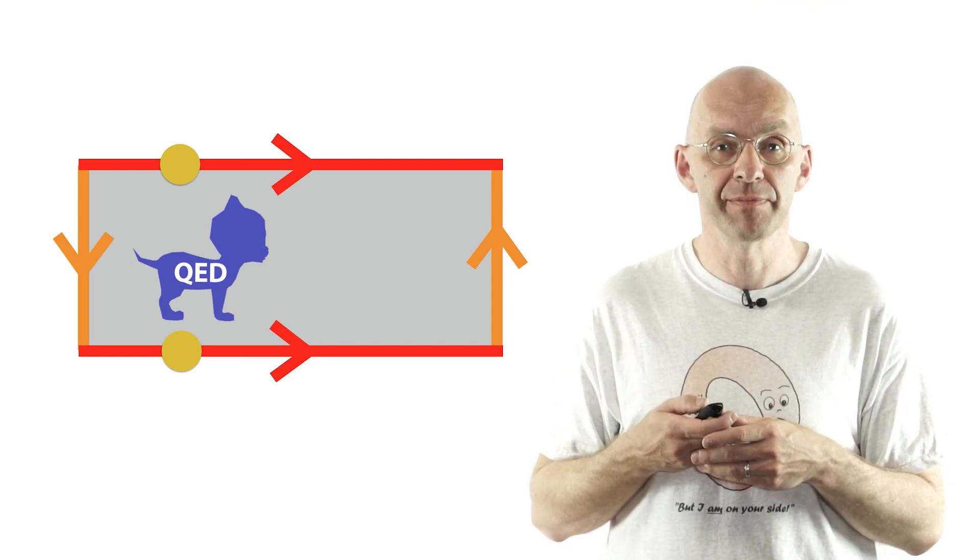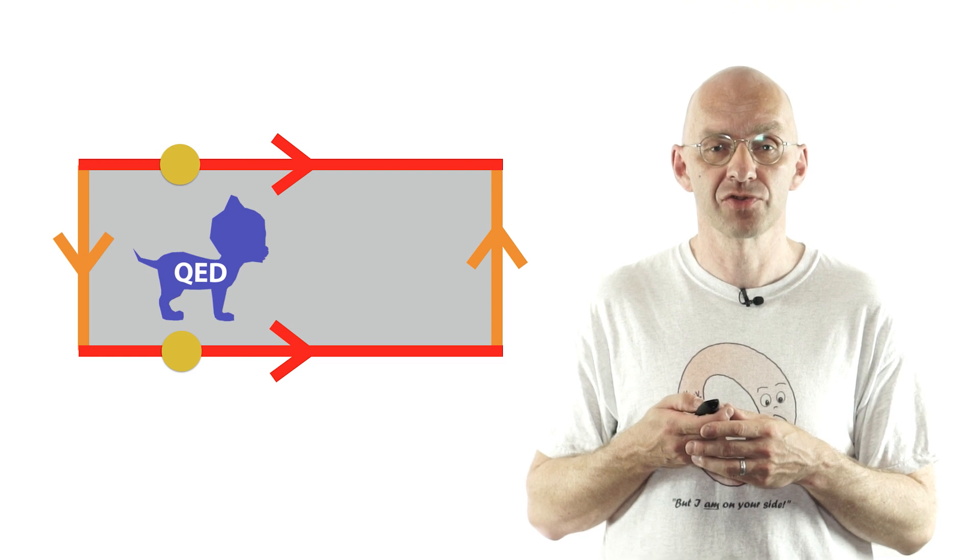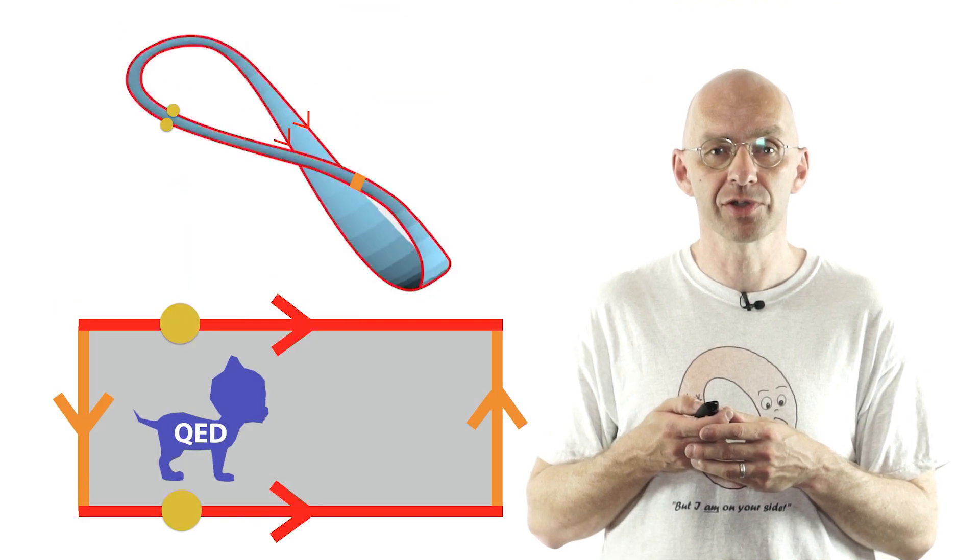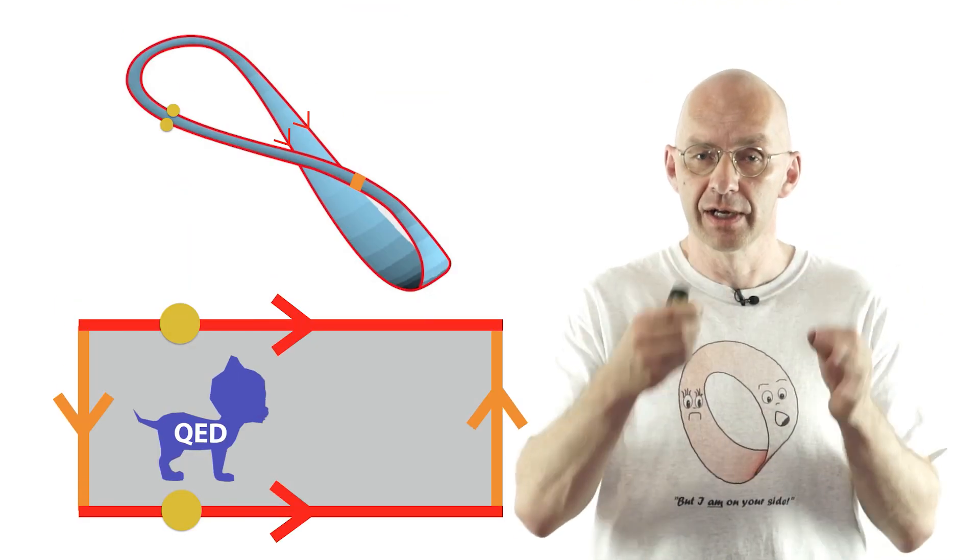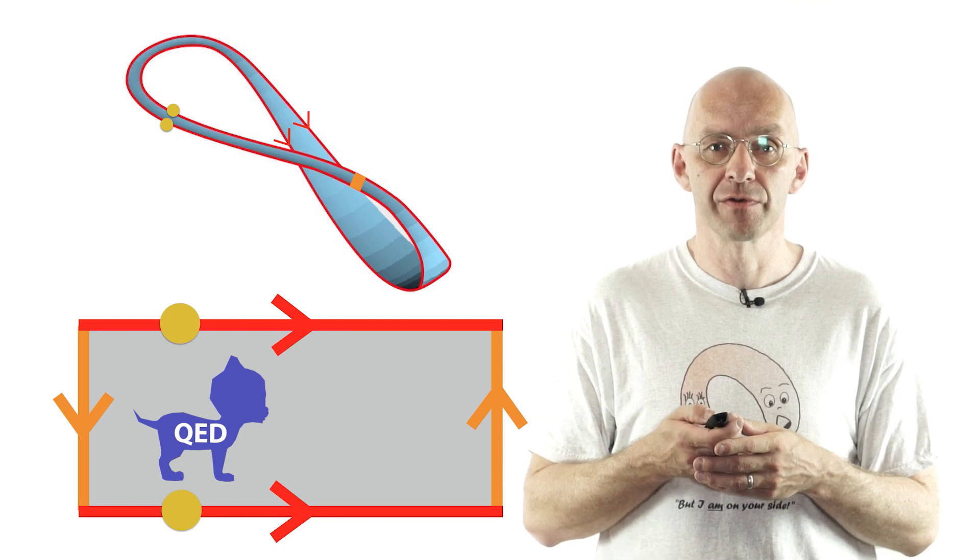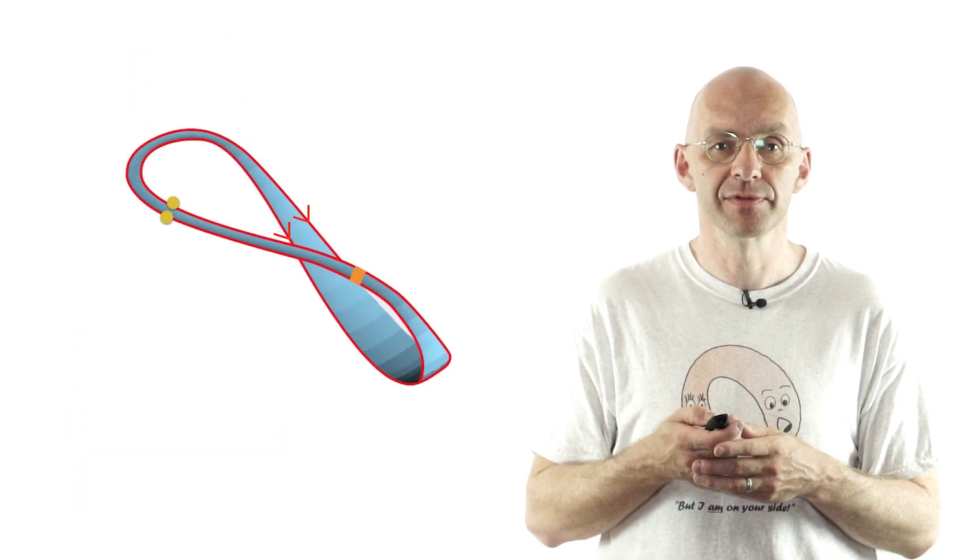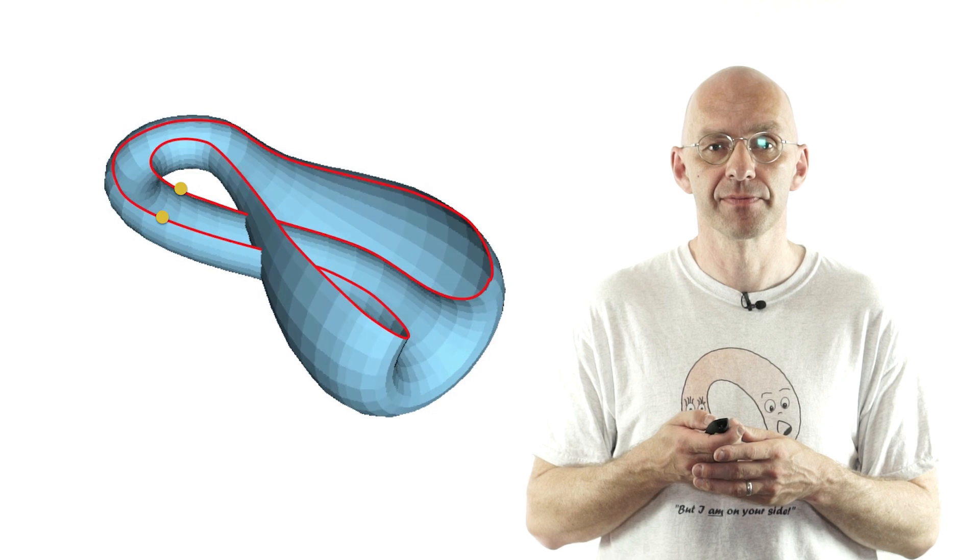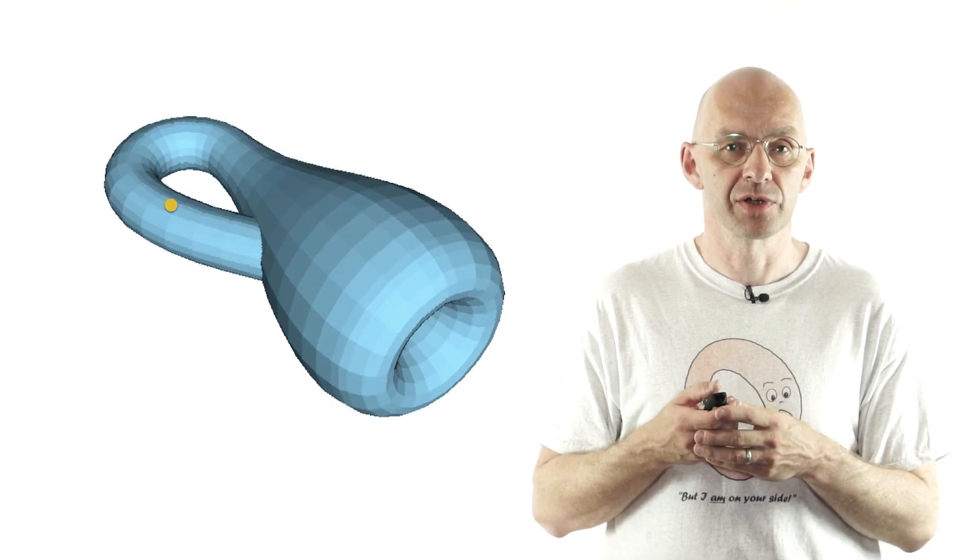And well since we are 3D beings I can actually show you this construction in space. So here I've got a Möbius strip and I'm just going to bring corresponding points of the edge together like this and there you've got your Klein bottle.